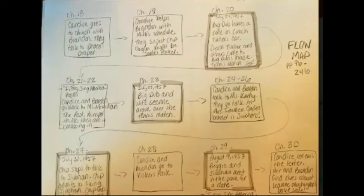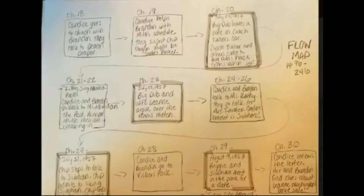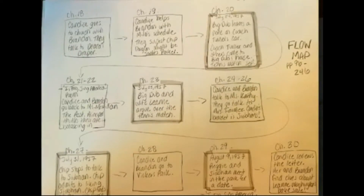Chapter 23, we jump back in time — Big Dub and wife Leanne argue over the tennis match. She thinks it's a bad idea and it's causing trouble. Chapters 24 to 26, Candace and Brandon talk to Miss Kathy — that's Mr. Gibbs's, Brandon's grandfather's, girlfriend. They go talk to Mrs. Farmer, a former Perkins High School student. She reveals a giant clue in this section: Candace's bracelet is Siobhan's. So she's been walking around with a clue on her wrist that she didn't even realize.